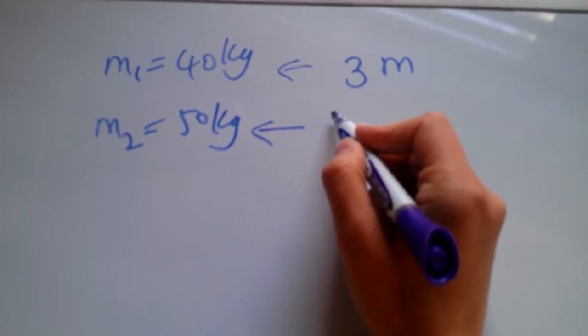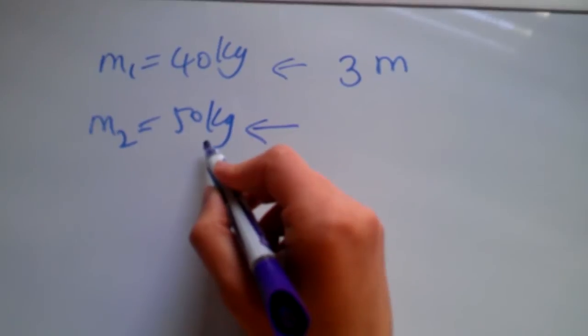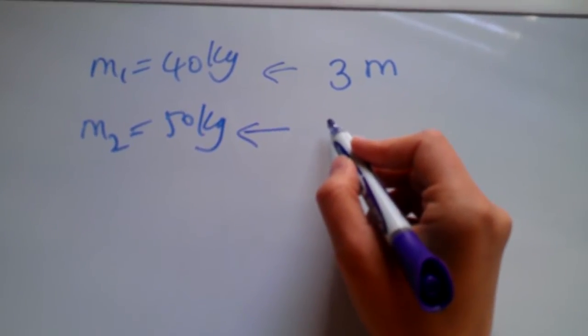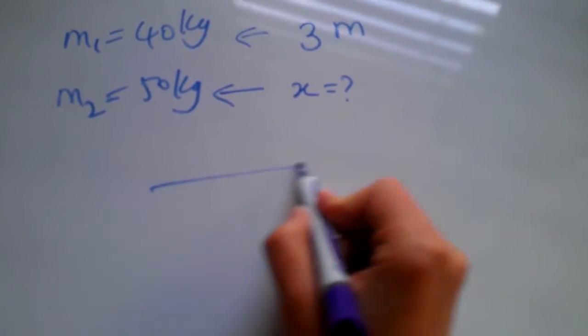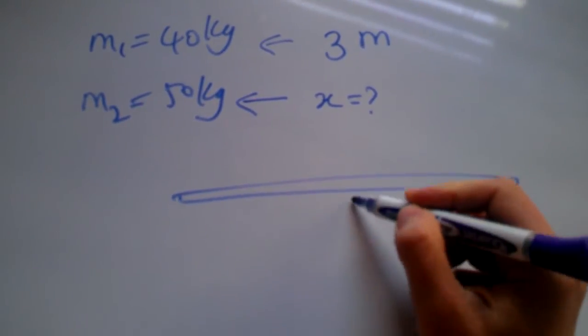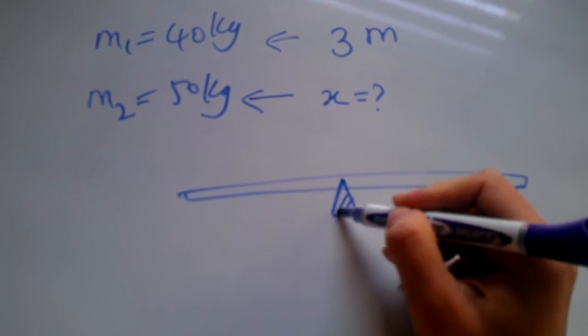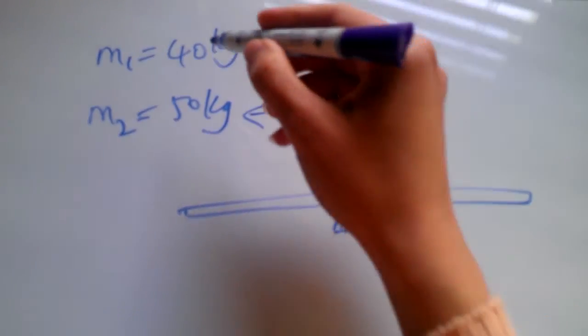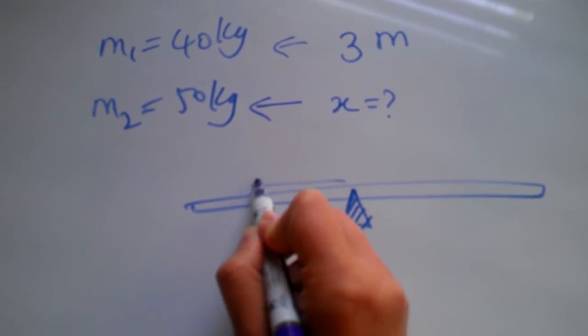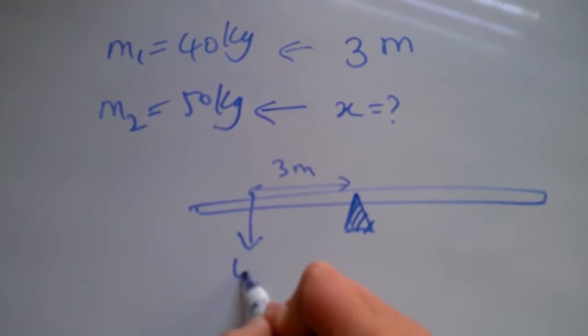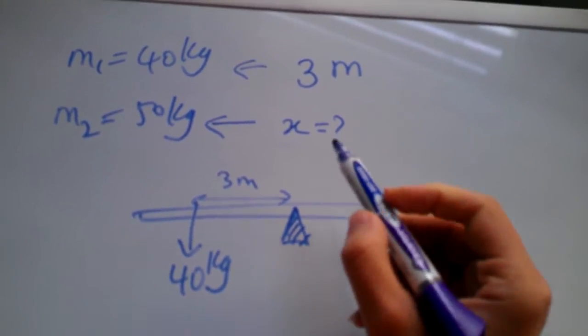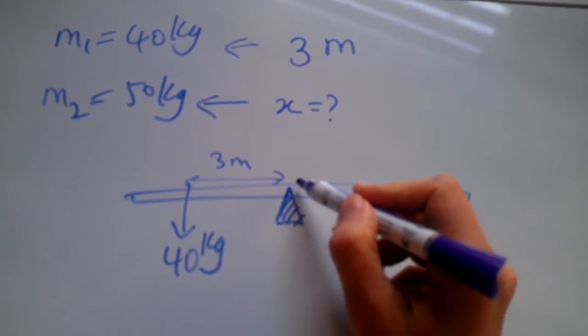If one of the kids, the lighter, is sitting about three meters away from the pivot point, where should the other kid, the heavier kid, sit in order for the seesaw to be balanced? Let's first draw the picture and this is the pivot point.